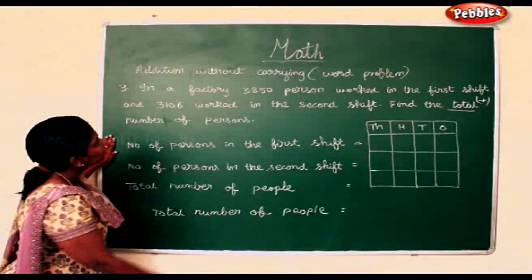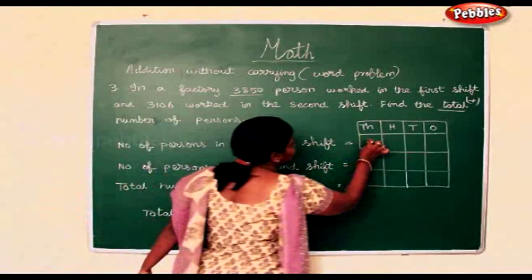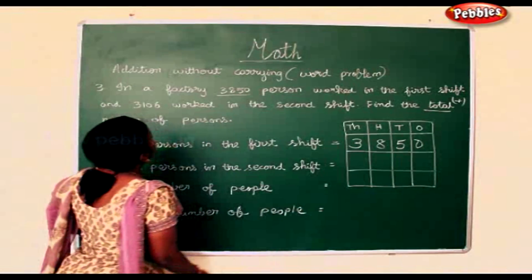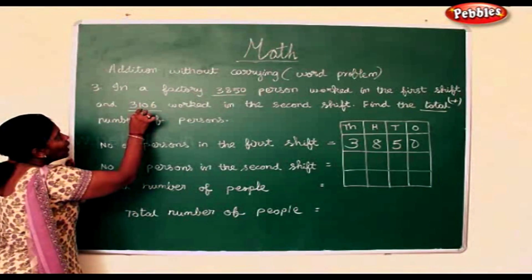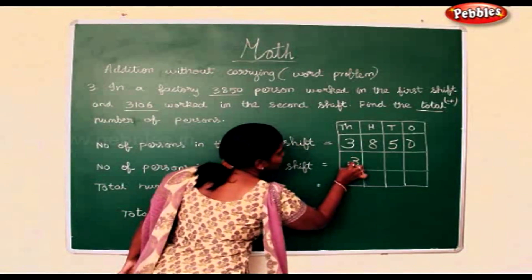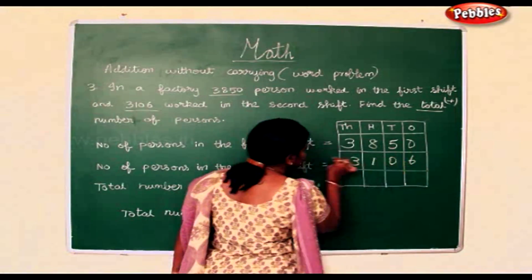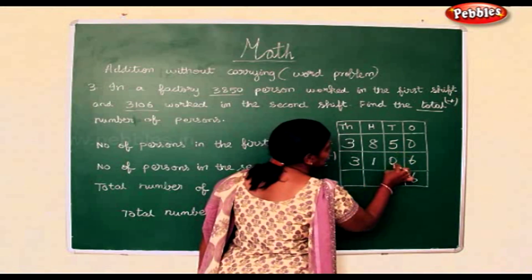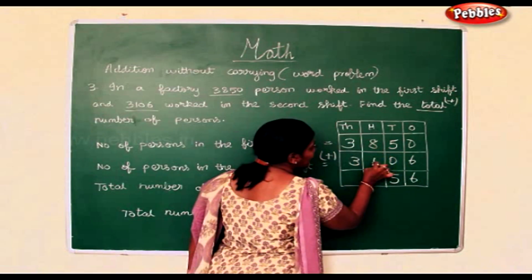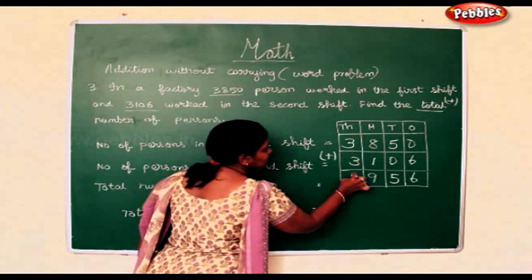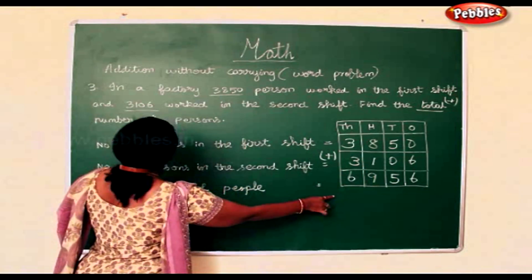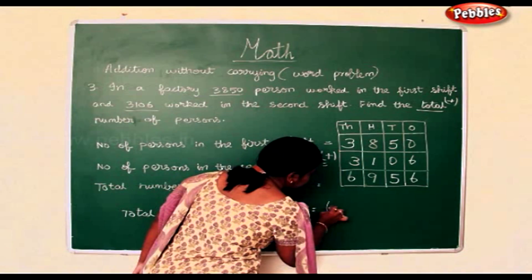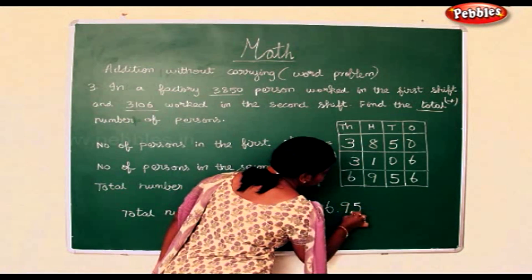The number of persons in the first shift is 3,850, and 3,106 worked in the second shift. We must use the addition symbol. 0 add 6 is 6. 5 add 0 is 5. 8 add 1 is 9. 3 add 3 is 6. So the total number of persons is 6,956.